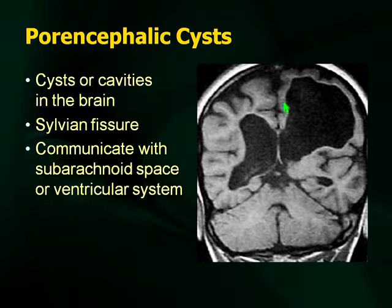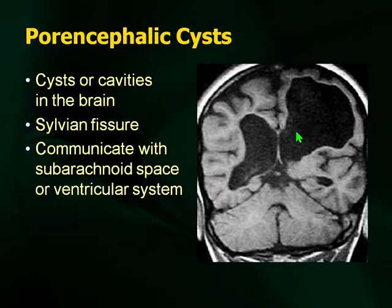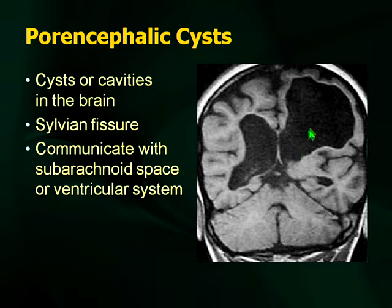The defect you'll see much more frequently is porencephalic cysts. Two types of cysts discussed a lot in pediatrics are arachnoid cysts and porencephalic cysts. Porencephalic cysts are associated with expansion of the ventricular system — this enlargement of the ventricle is often associated with premature babies. The other associated MRI finding is periventricular leukomalacia, which is associated with porencephalic cysts.